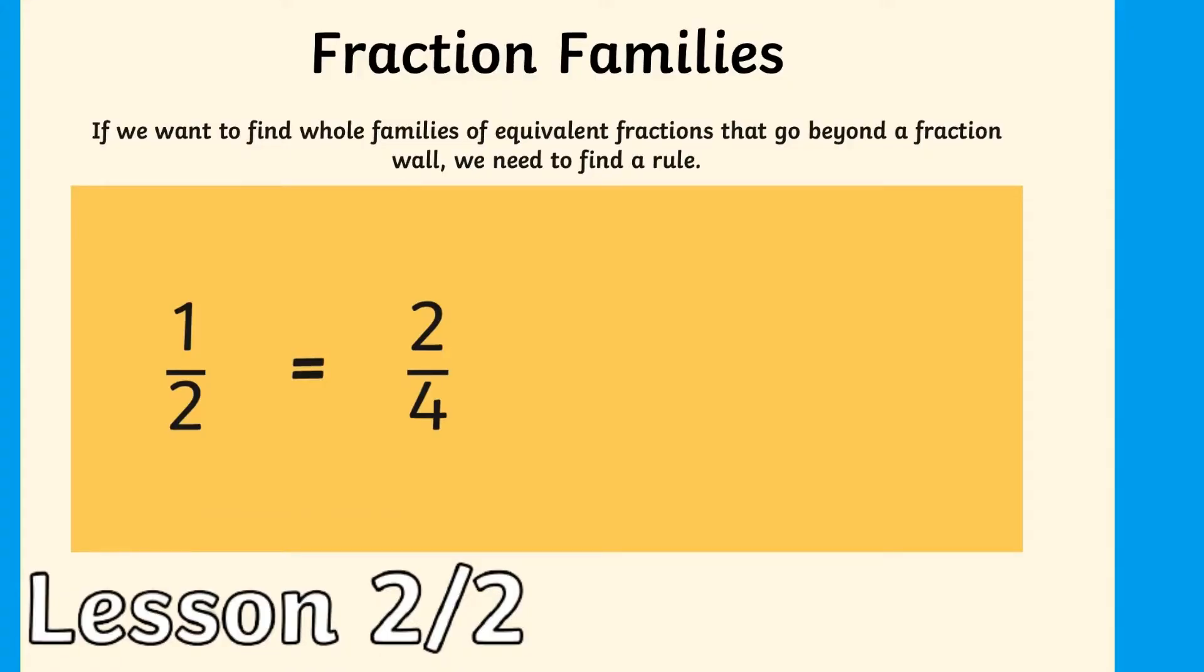In the second lesson, Sam continues to guide your children how to find equivalent fractions, however this time using multiplication and division. The numerator, the number on the top part of the fraction, has been multiplied by two, and so is the denominator, the bottom part of the fraction, giving us the fraction two quarters. Both parts, the top and the bottom, were multiplied by two.